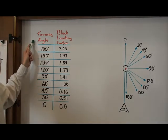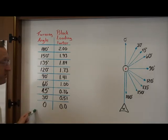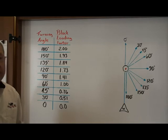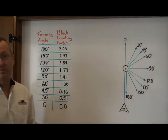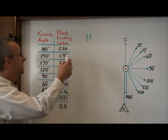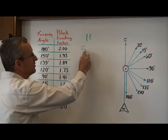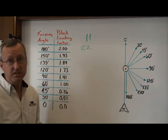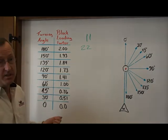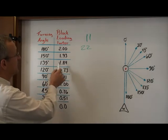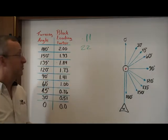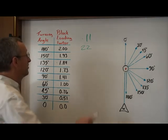You've got your turning angle, 180 right down through zero, and the block loading factor. So if you have a load of approximately 11 pounds, which is approximately what we had, obviously at 180 degrees, you're going to have double that, or around 22 pounds. There's some friction in your system, so it'll vary slightly. When you get down to 135 degrees, you take your weight, 11 pounds, times your block loading factor of 1.84, and you get to approximately 20 pounds.